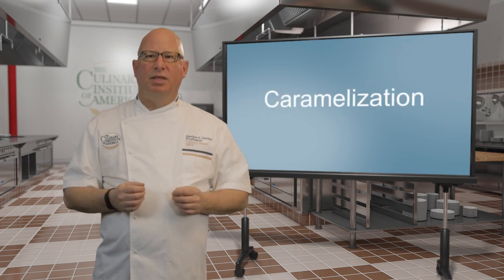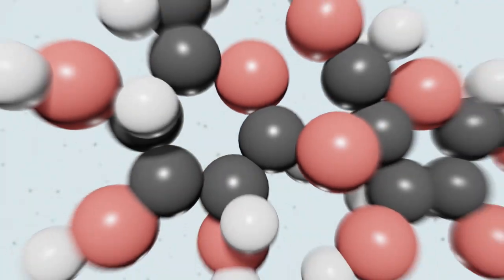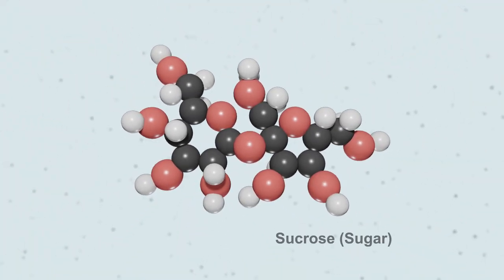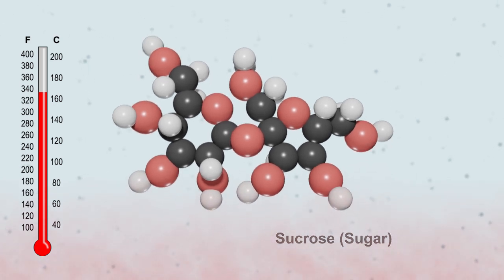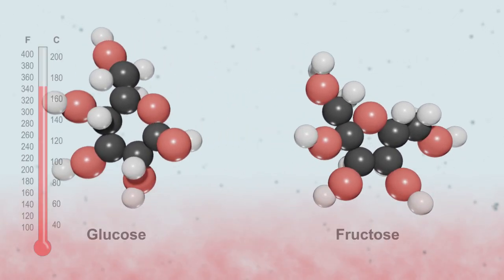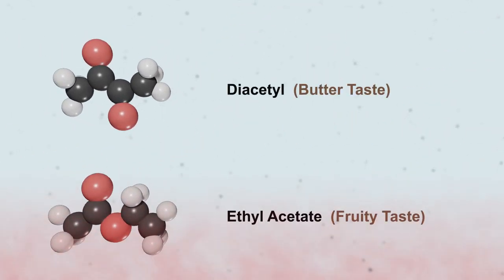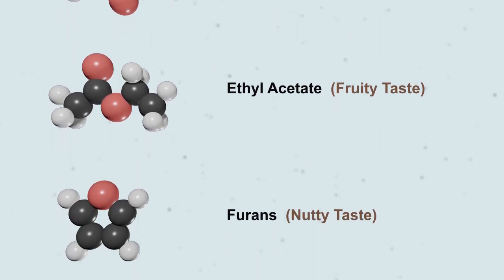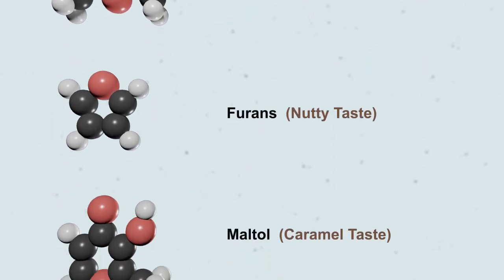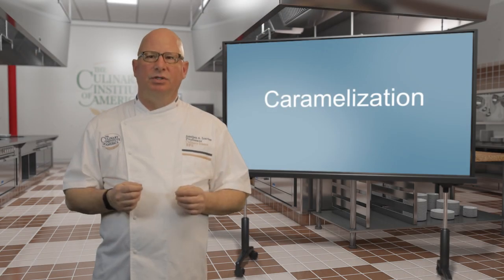Caramelization browning comes about by the heating of sugars to the point they physically break apart. Caramelization reactions can occur at lower temperatures but are greatly accelerated at temperatures above 150°C. Any sugar is capable of undergoing caramelization. The sugar molecule breaks down and rearranges to form hundreds of other compounds, including brown pigments and compounds that have strong flavors. Pure caramelization is very rare in the kitchen, as pure sugar systems are not very common.